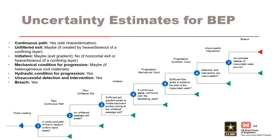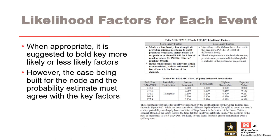For the generic backward erosion piping event tree, the presence of a flaw is often the greatest source of uncertainty, which will depend largely on the quality of site characterization and performance history. Uncertainty is also usually considered for nodes driven by hydraulic conditions: unfiltered exit if created by heave or blowout of a cover layer, initiation, and progression. For each node in the event tree, develop likelihood factors — this is a critical step because it is where the case is made for the probability estimate. Key factors that carry more significance can be shown in bold, but the case being built and the probability estimate must agree with the key factors. Generally, the evidence should point one way or the other, but a single factor can trump multiple factors in the other column.